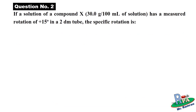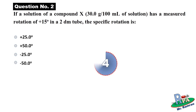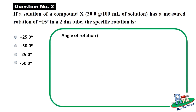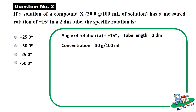Now let's start with the second question: if a solution of compound X — 30 grams per 100 mL of solution — has a measured rotation of +15 degrees in a two-decimeter tube, what is the specific rotation? Your options are provided. Pause the video and try to solve it on your own. The given quantities are: angle of rotation = +15 degrees; tube length = 2 decimeters. Concentration = 30 grams per 100 mL — whenever something is expressed per 100, that indicates a percentage, so concentration = 30 percent weight by volume.